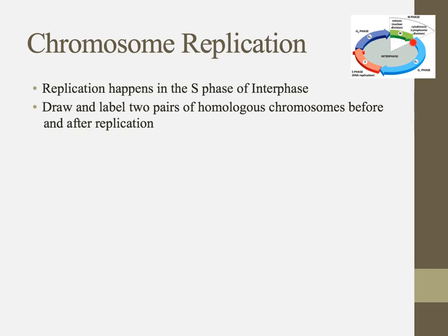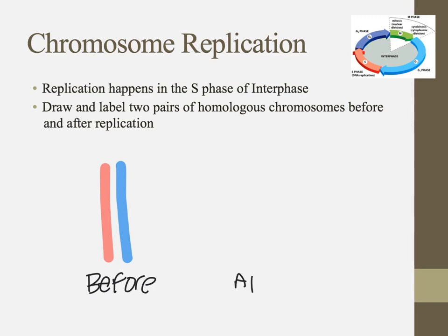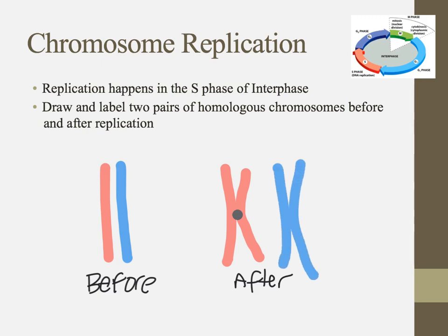This diagram of the cell cycle should look familiar. We focus a lot of our time on the cell division part, but really interphase is super important, particularly the S phase, which is where DNA replication happens. Homologous chromosomes are like a chromosome from the mom and a chromosome from the dad — they're the same length, contain the same genes in the same location, maybe just different alleles. This is what homologous chromosomes look like before replication. After replication, they're in their replicated shape with the centromere holding them together, which is how we generally see them — in that classic X shape.